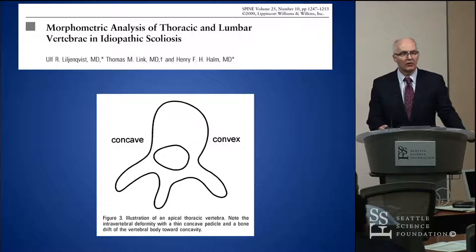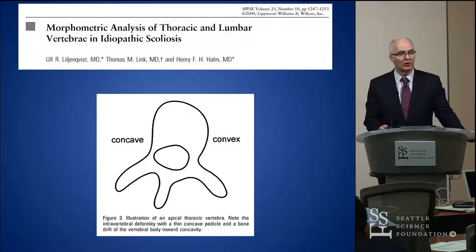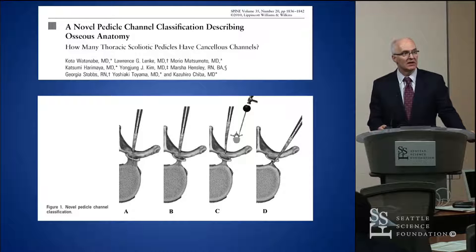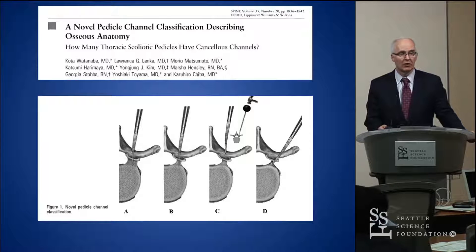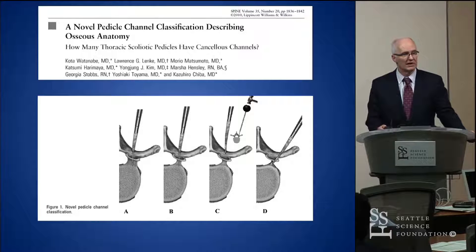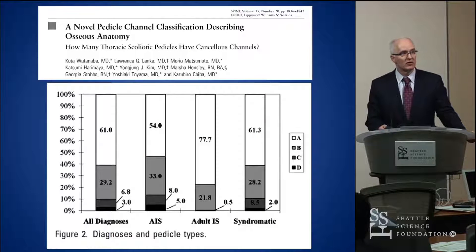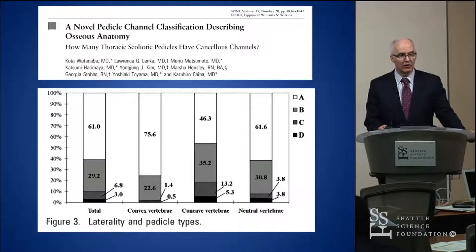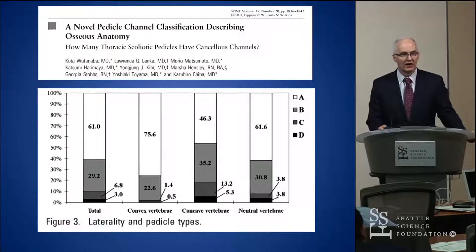In deformity, multiple studies have shown deformation of the pedicle with the abnormal growth of the spine. Lenke and Watanabe characterized this in A, B, C, and D type categories — most surgeons without navigation can manage an A pedicle, C pedicles are typically all cortical and really tough, and D pedicles probably don't truly exist. It's AIS patients who have this problem, especially in the concave vertebra — the most difficult pedicles are where the spinal cord is plastered up against the pedicle and at highest risk.